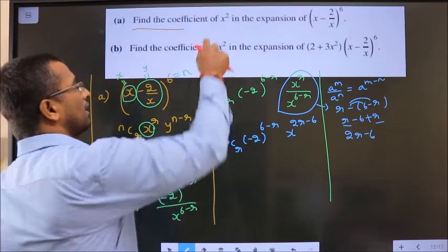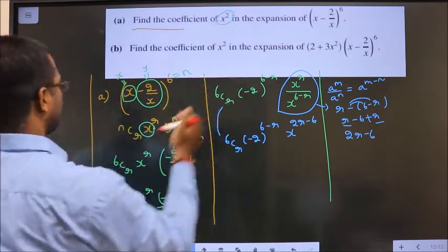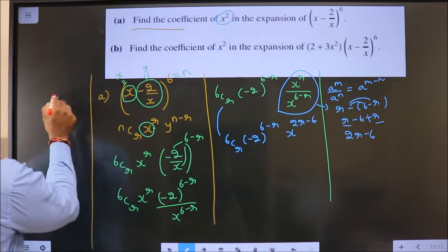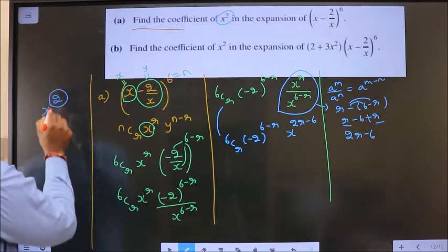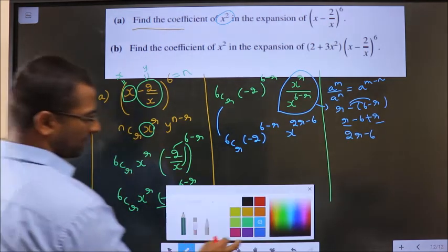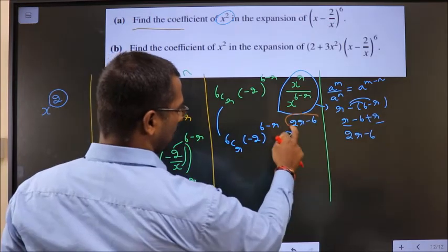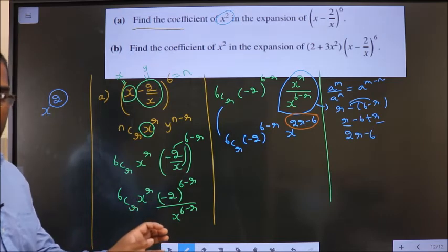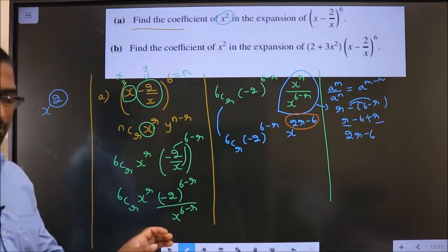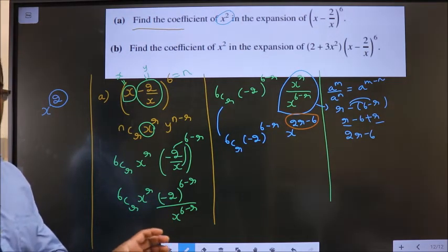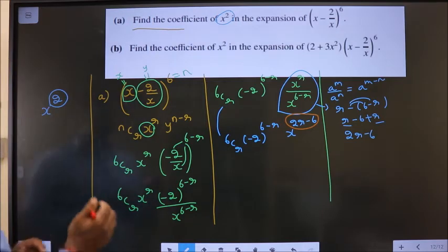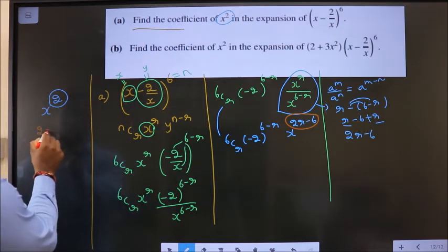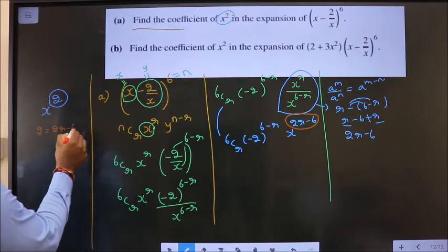Now, I need coefficient of x square. On x, the power is 2 here. And here, on x, the power is 2r minus 6. Equate both the powers of x to get the value of r.